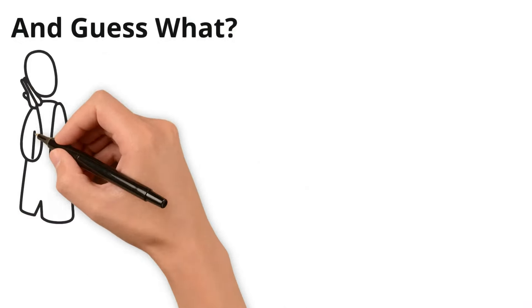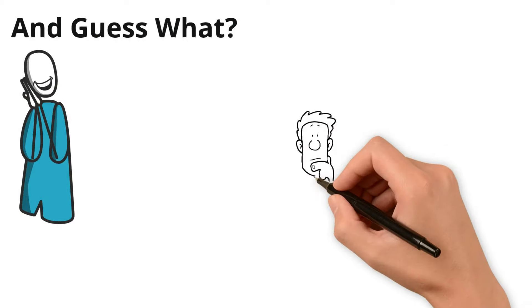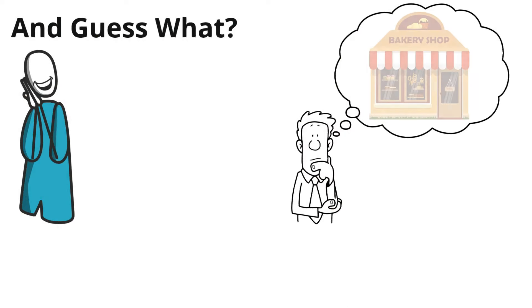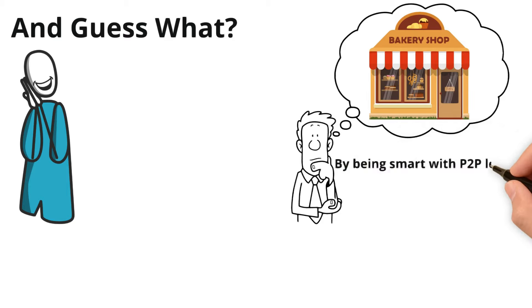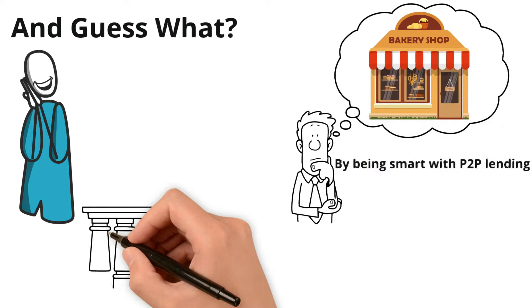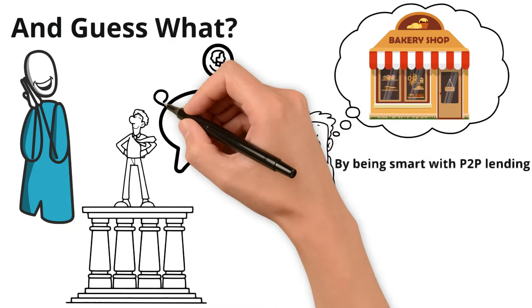Your money might help someone's dream come true. Imagine someone opening their own bakery because you lent them money for an oven. By being smart with P2P lending you could be part of someone's story of success and all the while your own savings keep getting bigger like magic. How great is that?